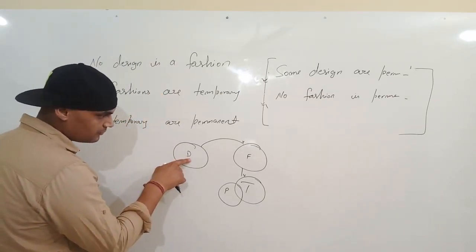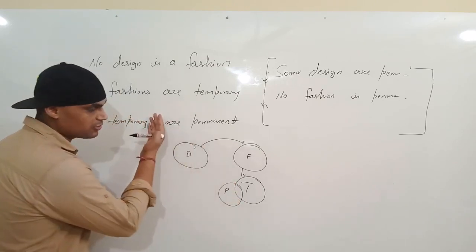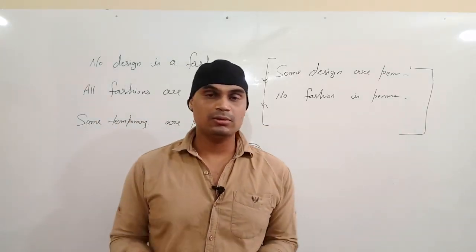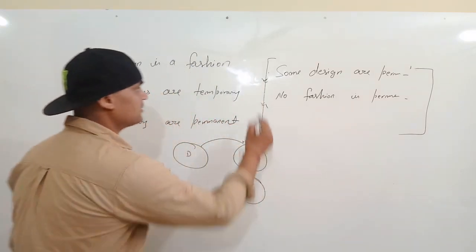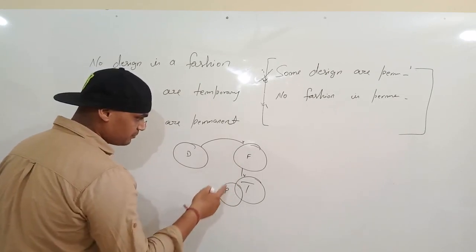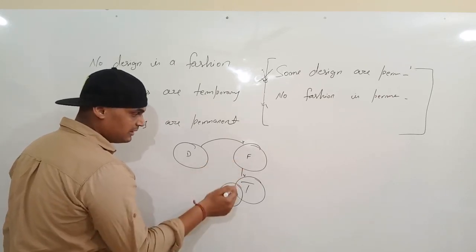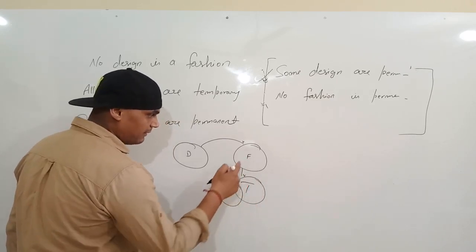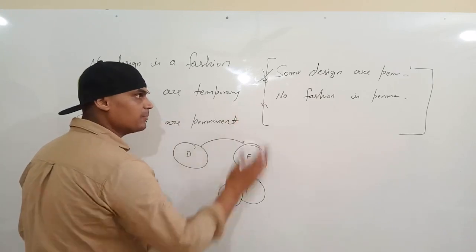Ab questions ke answers: 'Some designs are permanent' — Design aur permanent ka connection ho to sakta hai, lekin certain nahi — ek figure aisa bhi ban sakta hai. Unhone certain bol diya, toh ye galat hai. 'No fashion is permanent' — F ka T ke saath connection nahi hai, lekin P ka relation F ke saath ho sakta hai. Figure alag bhi ban sakta tha, toh aap certainly nahi bol sakte — ye bhi galat hai.